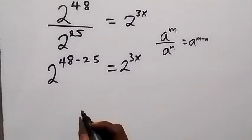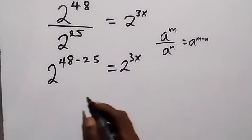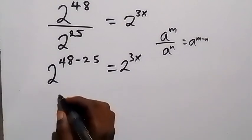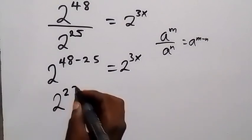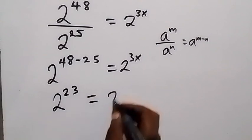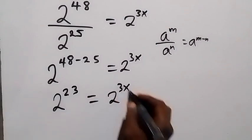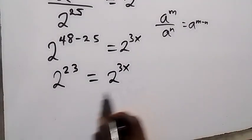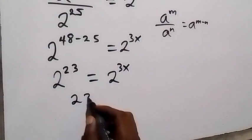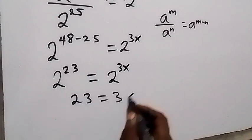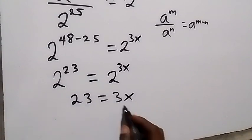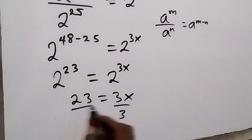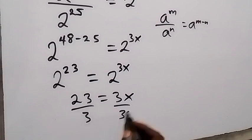48 minus 25 is 23, so we have 2 raised to power 23 equals 2 raised to power 3x. Since the bases are equal, we equate the powers: 23 equals 3x. Dividing both sides by 3, the 3s cancel, leaving x.